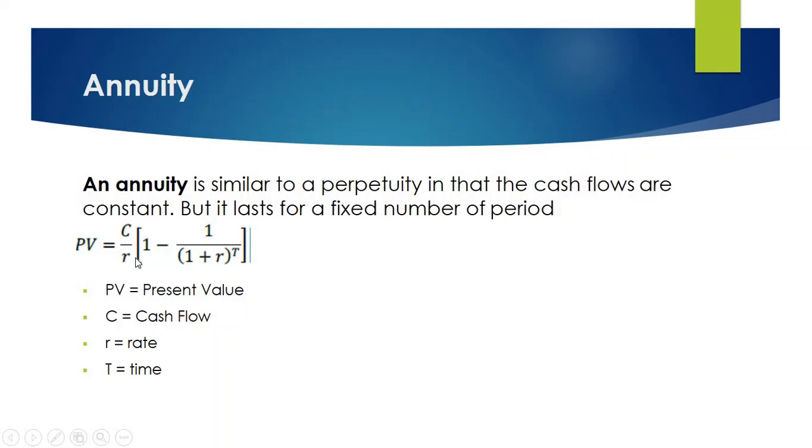C divided by R in bracket 1 minus 1 divided by 1 plus R to the power T is the present value formula of annuity.